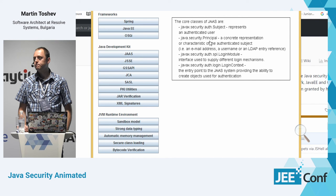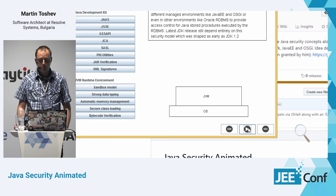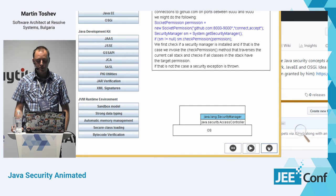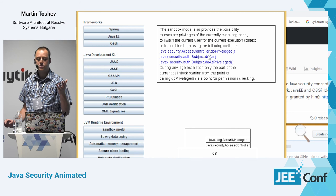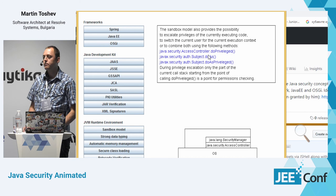Question: How is privilege escalation protected from being used by malicious third parties? If you want to disallow the use of doPrivileged(), there is a specific security permission you can define in the security policy file that disables that method for a given application. So you can disable doPrivileged() in the security policy file.